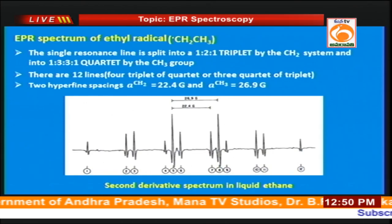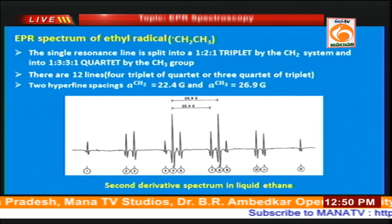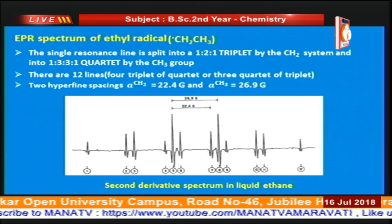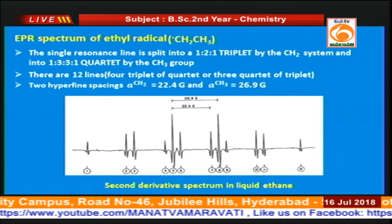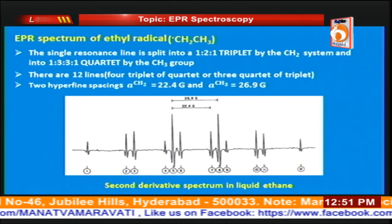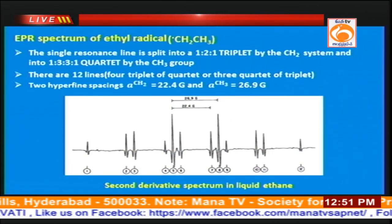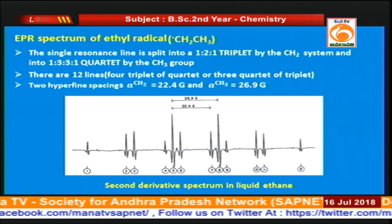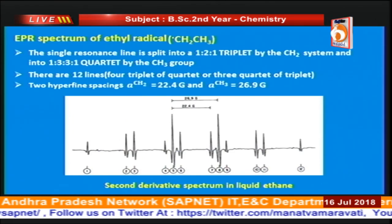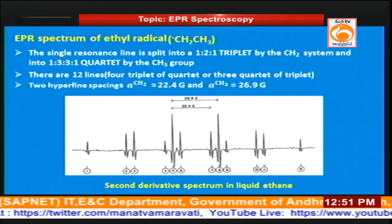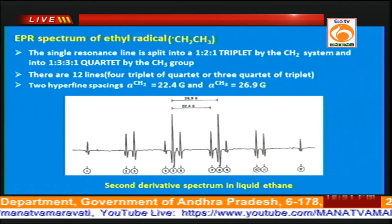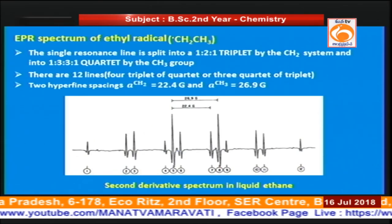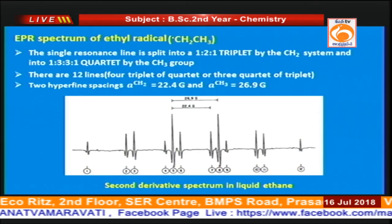Now let us see the ESR spectrum of the ethyl radical. In the case of the ethyl radical there are two types of protons: the methylene protons near the radical and the methyl protons in a different chemical environment, both of which couple with the radical. Since there are two different sets of protons, we use the formula (N₁ + 1)(N₂ + 1), giving 12 lines. As shown in the diagram, there are two different coupling constants — one with the methylene protons and one with the methyl protons, with values as indicated.